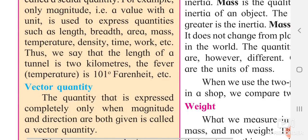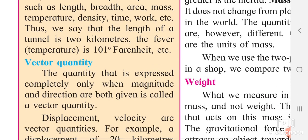A vector quantity is a quantity which can be expressed in terms of magnitude and direction both. The quantity which can be expressed in terms of magnitude and direction is said to be a vector quantity.